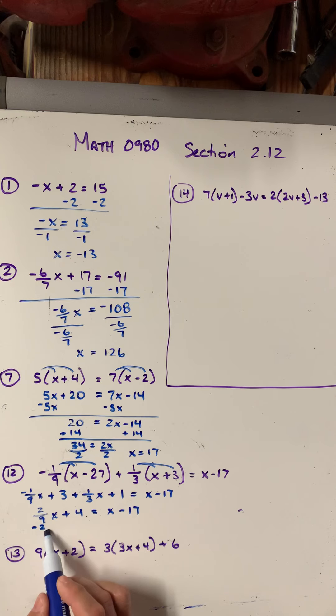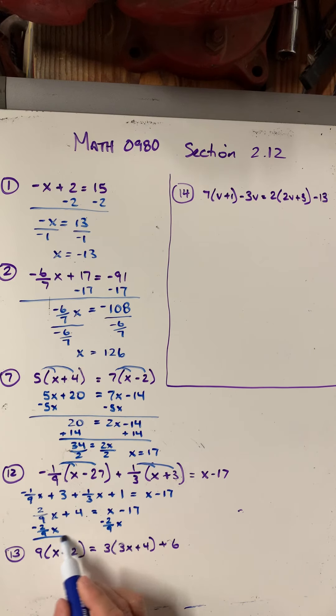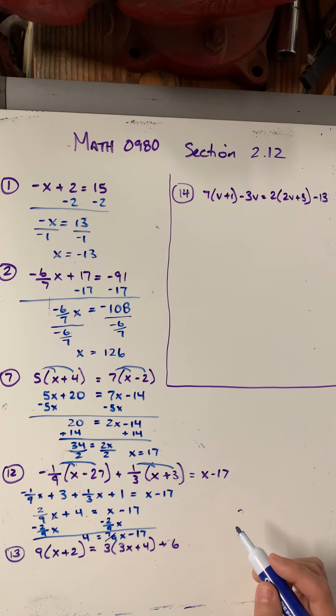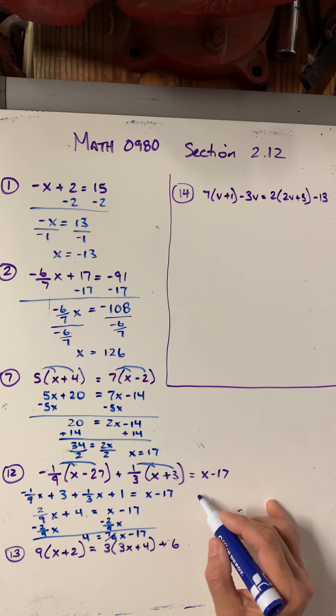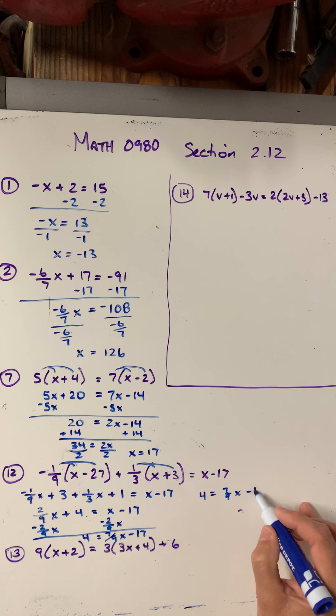I'm going to subtract 2 9th x from both sides so that I can get all the x's on the same side. And I will end up with 4 on this side equals x minus 2 9th or 1 minus 2 9th is 7 9th x minus 17. Then I'm going to add 17 to both sides. So let me rewrite this right here.